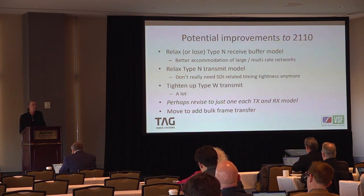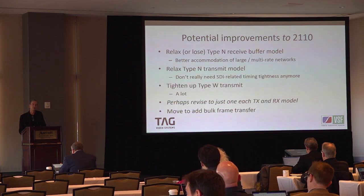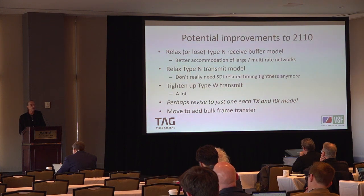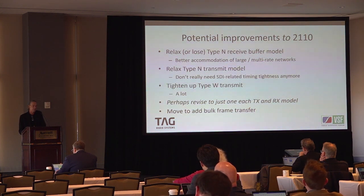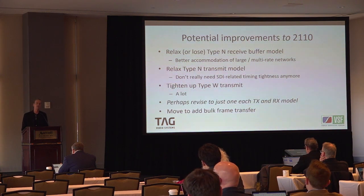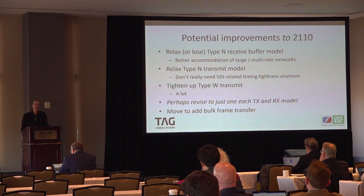Perhaps we can improve the standard further. Maybe we lose the Type N receiver model — it may have done its job. We've discovered some headroom in the standard, latency is not a huge issue, and we might better accommodate bigger, sloppier networks with a slightly wider narrow model. Maybe we also relax the Type N transmit model a little — we don't really need that level of timing tightness. And perhaps we tighten up the wide transmit a lot, looking at doing one of each: amending the standard to define a universal receiver and a universal transmitter that can be accommodated in software today with pacing NICs.